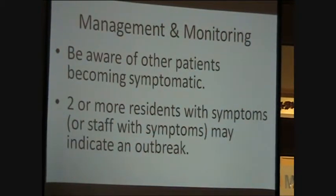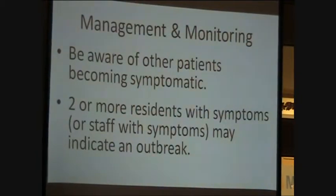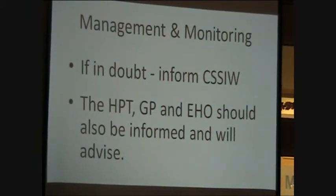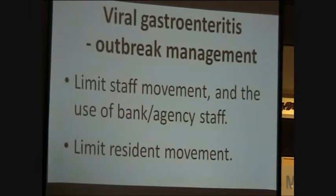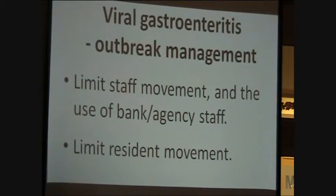You must have a heightened awareness of other residents developing diarrhea or vomiting. When there are two or more residents with symptoms, this may indicate an outbreak. If you are in any doubt, you should inform the Care and Social Services Inspectorate Wales. The relevant GP, the health protection team, and the environmental health officer should also be informed and will advise. When an outbreak is suspected or confirmed, you should limit staff movement and the use of bank or agency staff. You should also limit resident movement, including non-essential visits to hospitals.